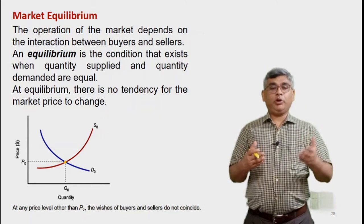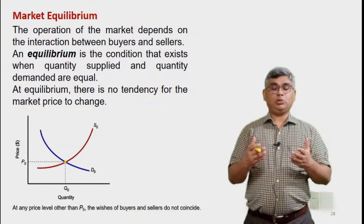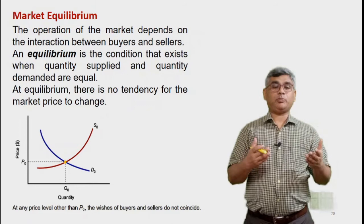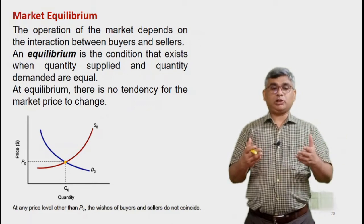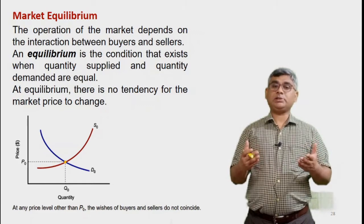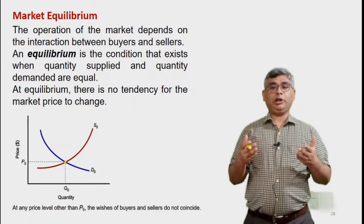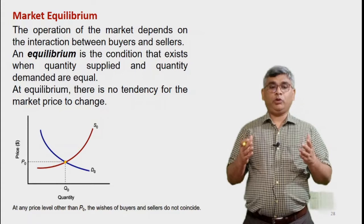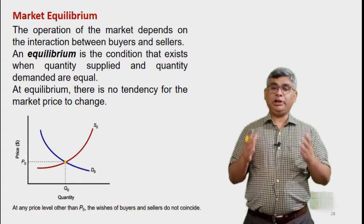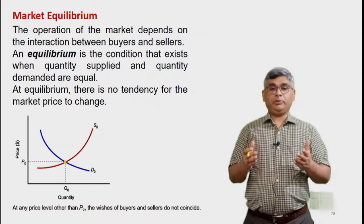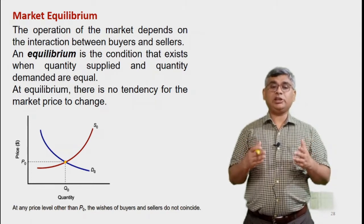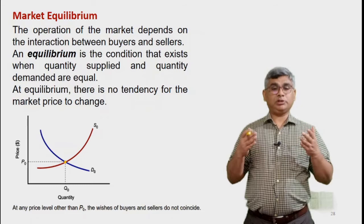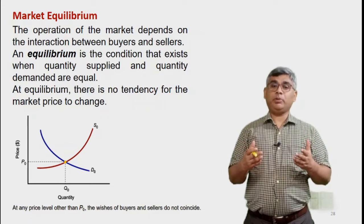At the equilibrium point, we have a supply curve and a demand curve, and the point at which these two intersect ideally reflects the price at which any item or good should be available in the market. This is what we call equilibrium. There is a tendency of the market to shift any disequilibrium situation back to this equilibrium point.